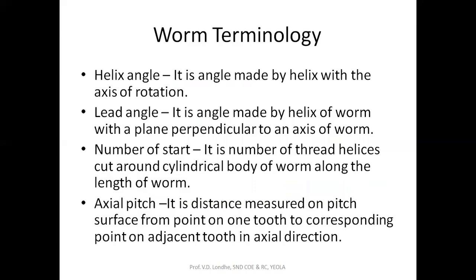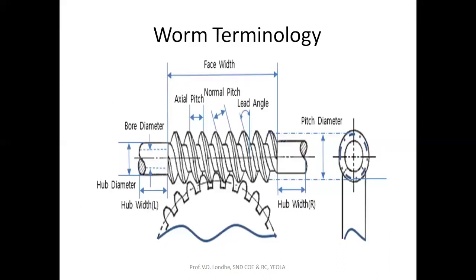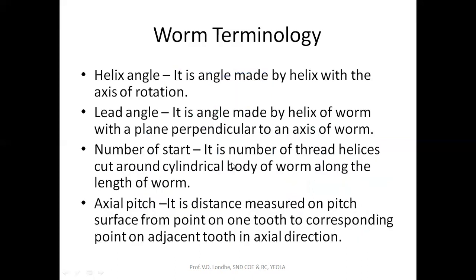The first definition is the helix angle. It is the angle made by the helix with the axis of rotation. As you can see, this is the axis of rotation, and whatever angle is made by the helical structure with the axis of rotation is called the helix angle.